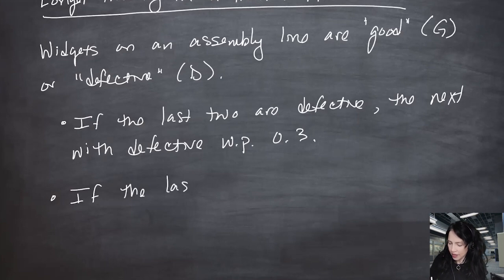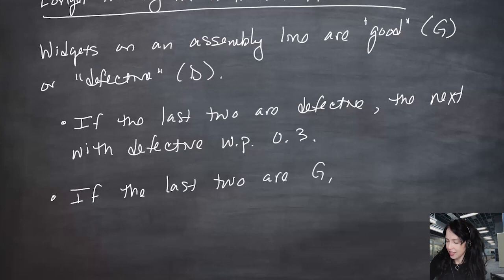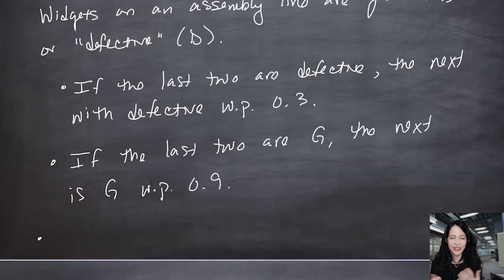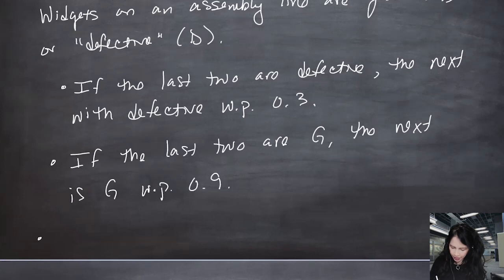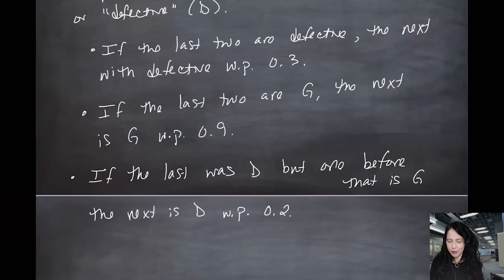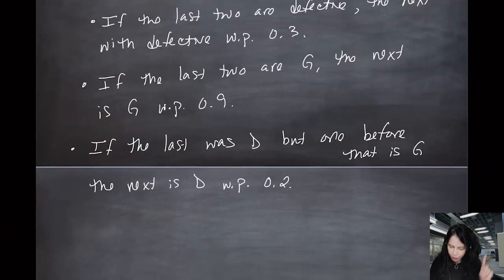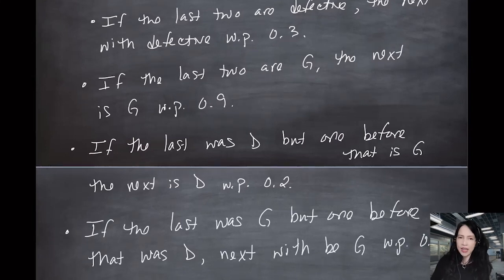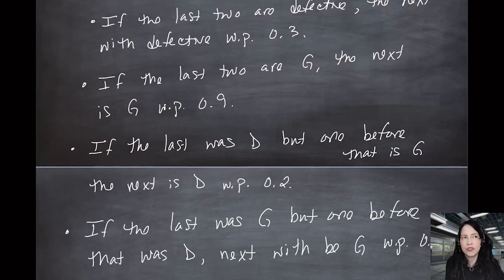I have not fully described this. If the last was defective and the one before that was good, the next is defective with probability 0.2. And if the last was good but the one before that was defective, the next will be good with probability 0.6. So I want to ask questions like: if the last two were defective, what is the probability the next two will be good? Things that aren't directly given by these statements.